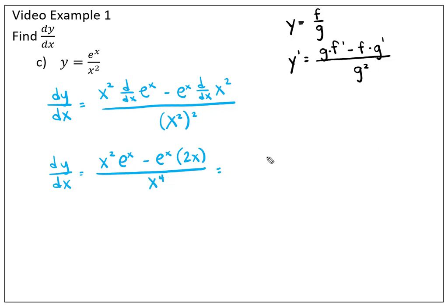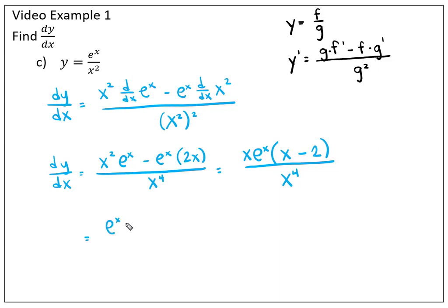Let's simplify. The numerator has x and e to the x in common. x squared e to the x divided by x e to the x leaves x, and 2x e to the x divided by x e to the x leaves 2. So we have x times (x minus 2) over x to the fourth. With x to the first and x to the fourth, we can reduce to get e to the x times (x minus 2) over x cubed. That's our derivative.